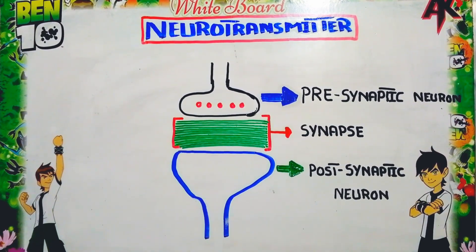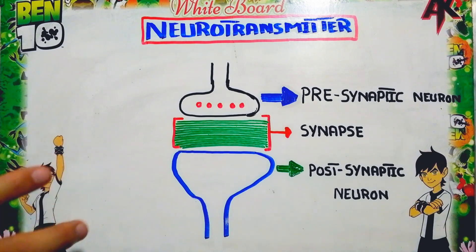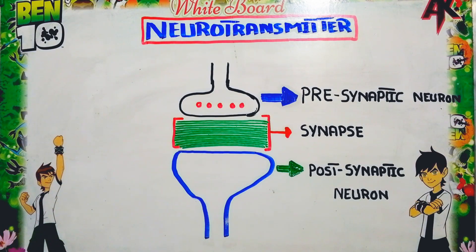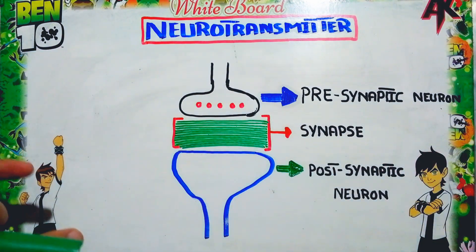In this video lecture we will talk about neurotransmitters, a topic mostly related to physiology. Our nervous system is composed of billions of neurons, but these neurons are not directly connected with each other. A special type of junction is present between these neurons, and this special junction is called a synapse.